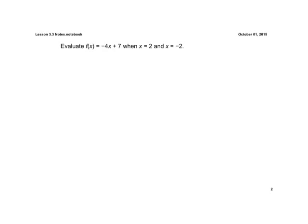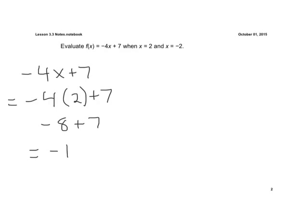So the first one, when x is 2, all we're going to do is substitute that 2 in for x. So we have negative 4x plus 7. Now we're going to substitute that 2 in for x. So instead of x, now we have 2. So we have negative 4 times 2, which is negative 8, plus 7. So a negative plus a positive is negative 1. So our first answer is f of x equals negative 1.